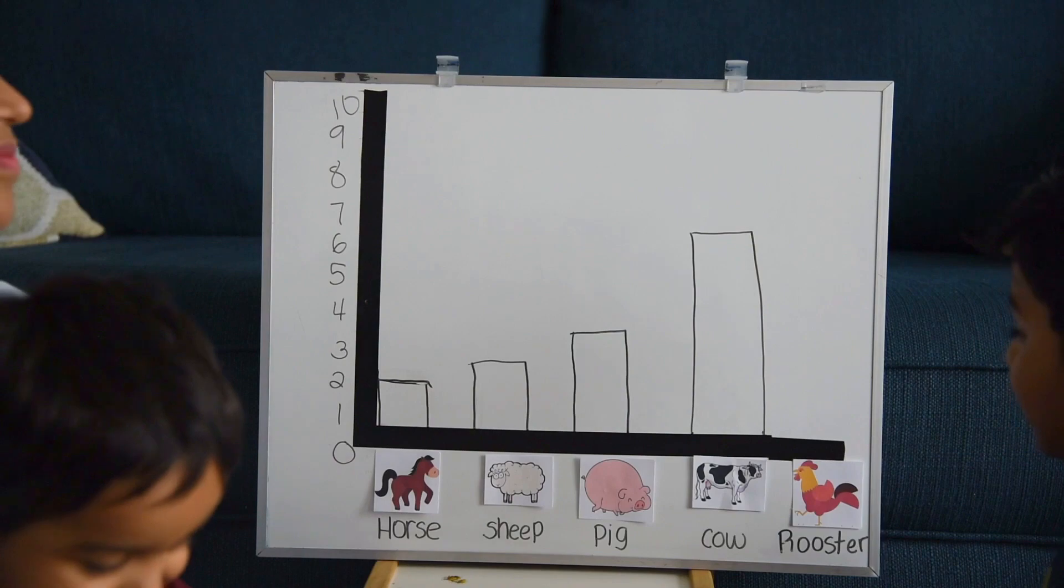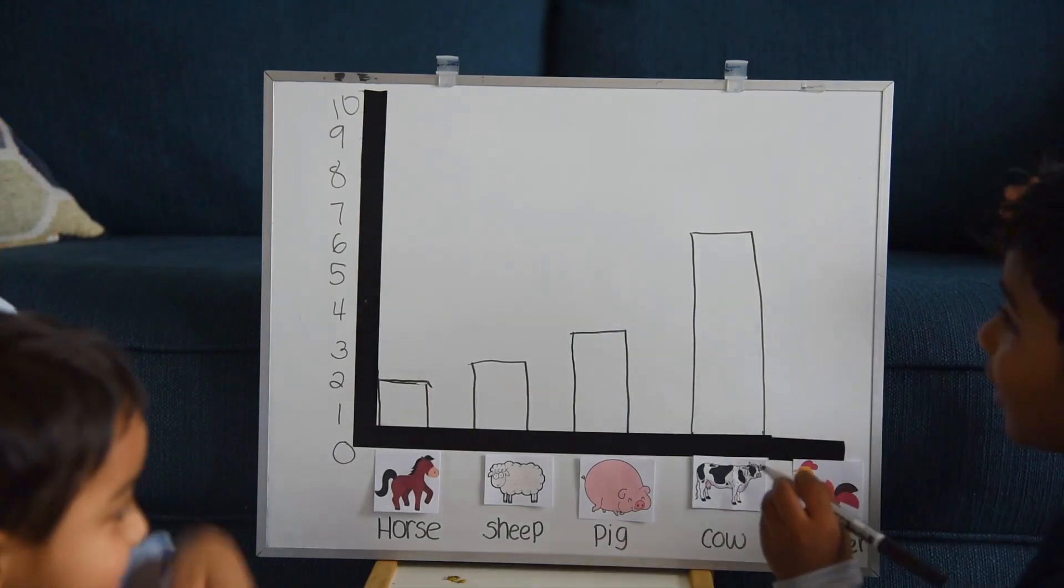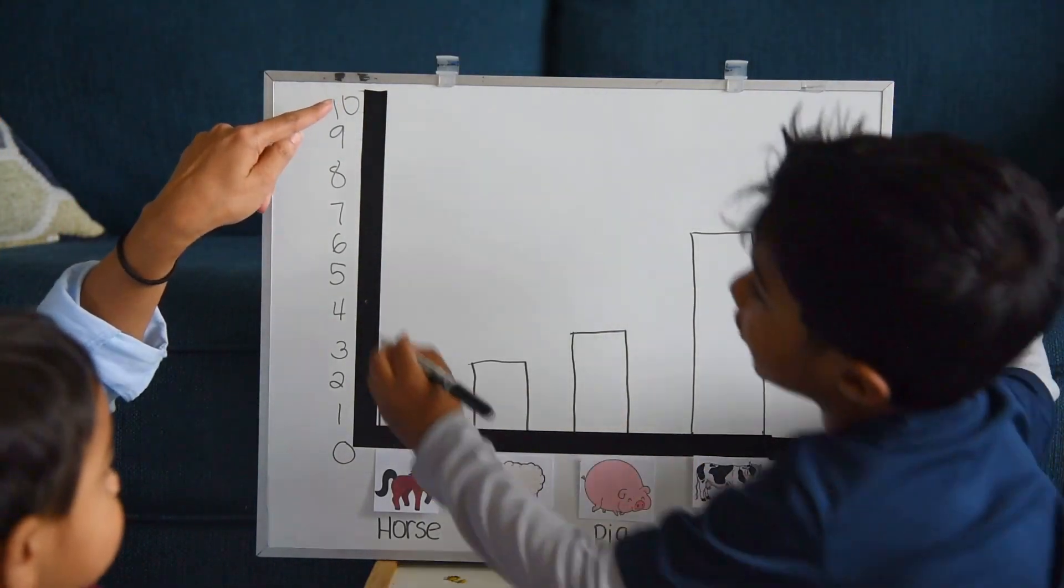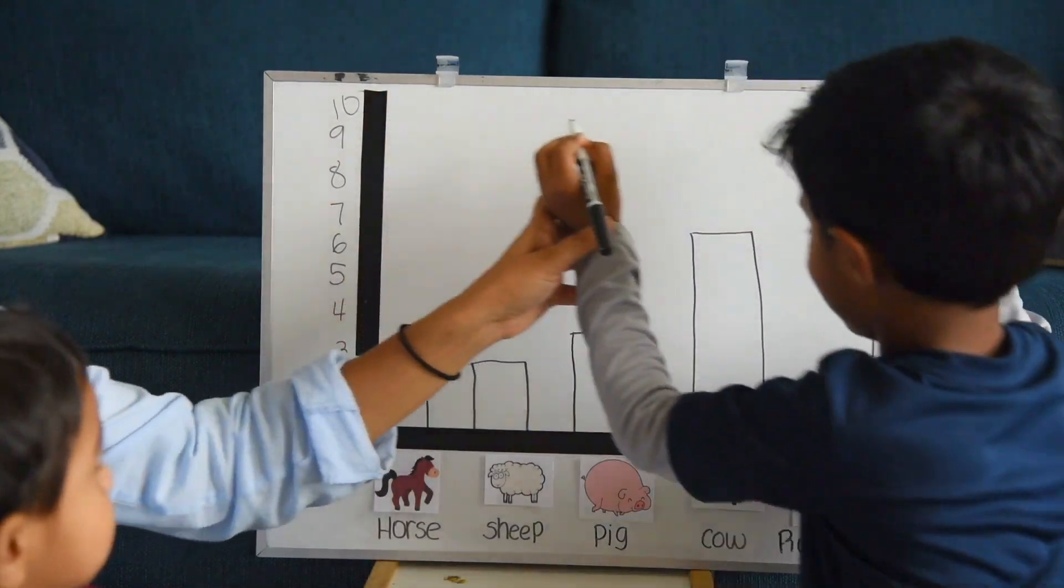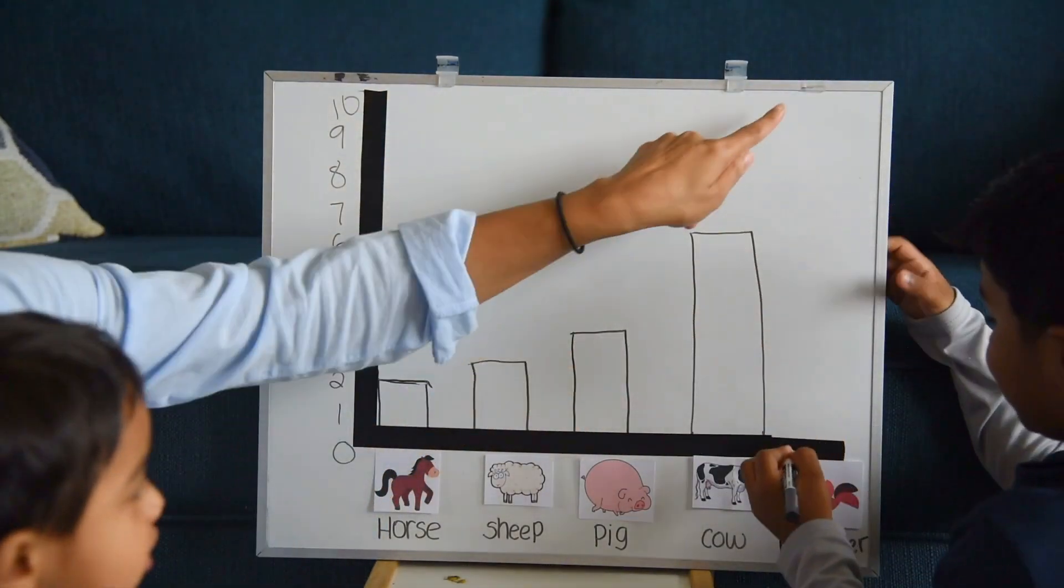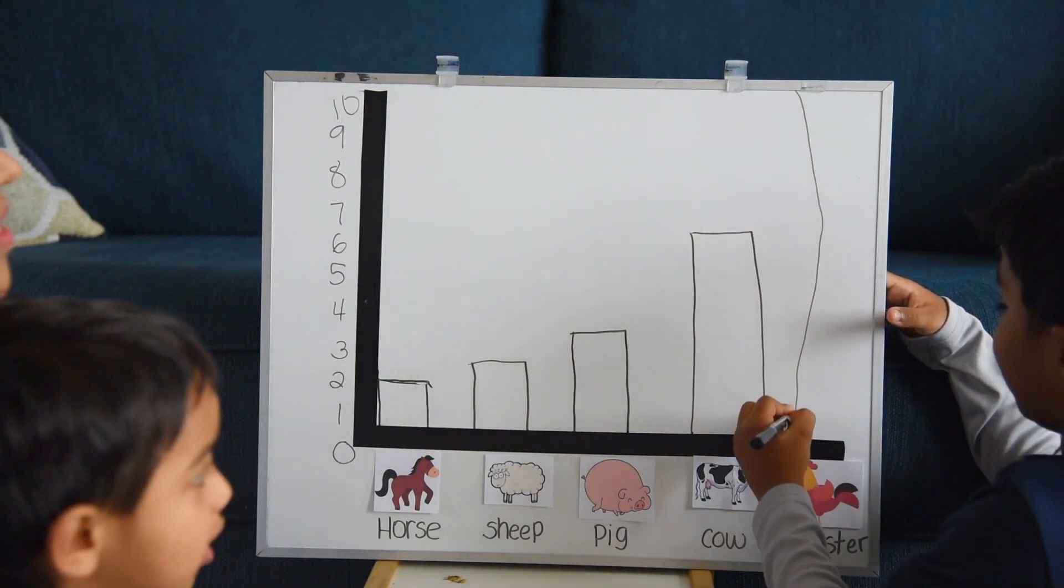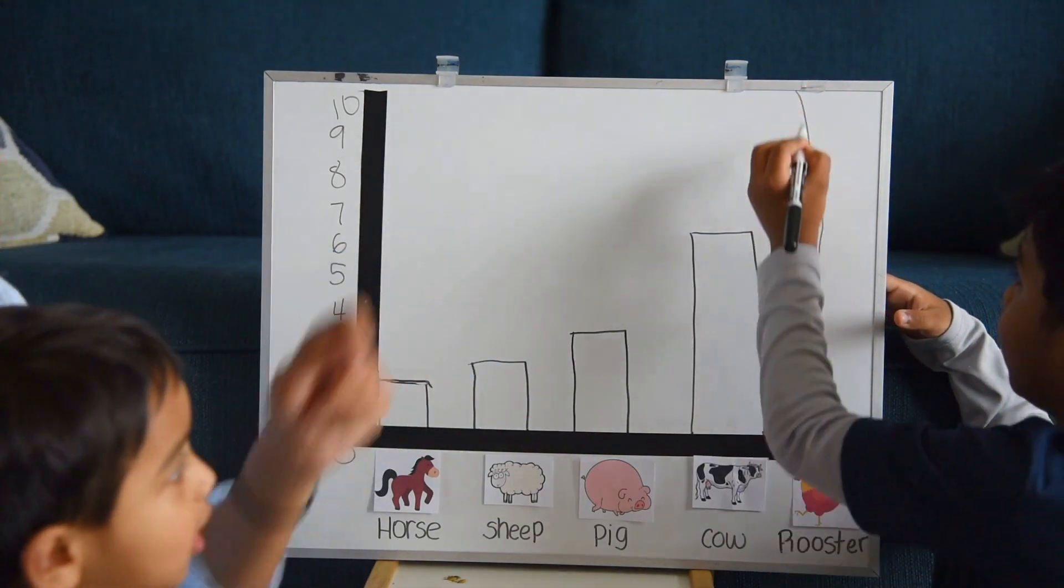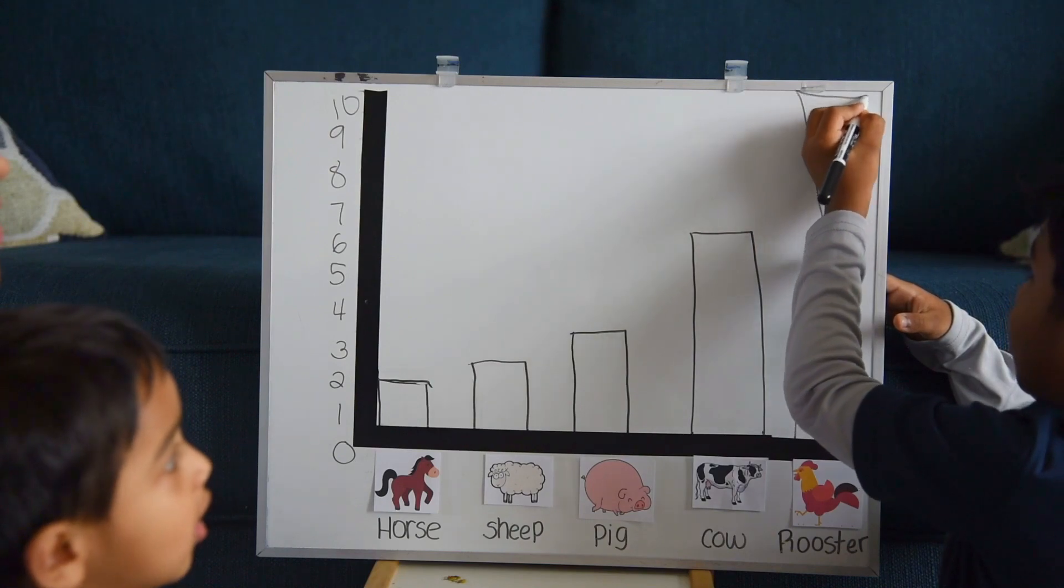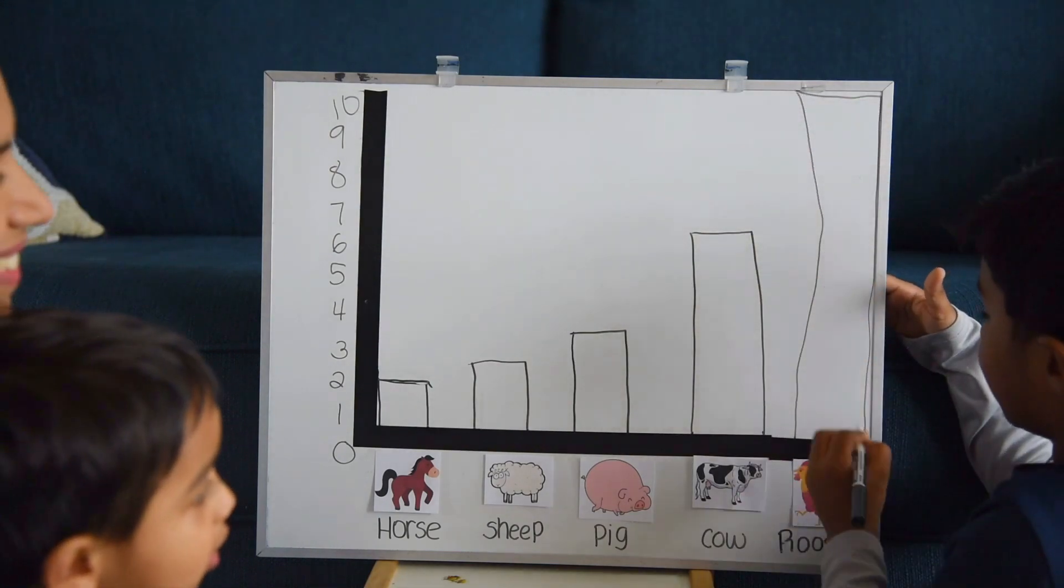You ready? First, pick a number for the rooster. Ten. First, find the ten, and then go slide to rooster, and I'll make a line from here. Start there and go down and make a top little bar area and then go down. Good!